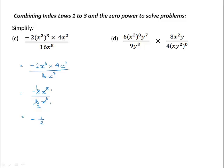In this expression we have brackets as well as terms being raised to the power 0. If we look at the numerator, x squared to the power of 0 would just be 1. So the numerator for this fraction becomes 6 times 1 times y to the 7, or 6y to the 7. For the second fraction, the numerator is 8x squared y, and if we look at the denominator, we have x, y to the power 2, all raised to the power of 0, so this is just 1. So in the denominator we have 4 times 1, or 4.